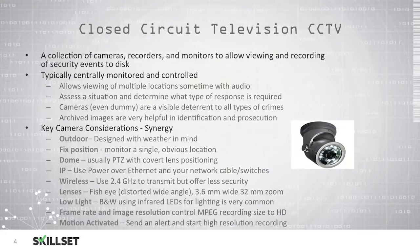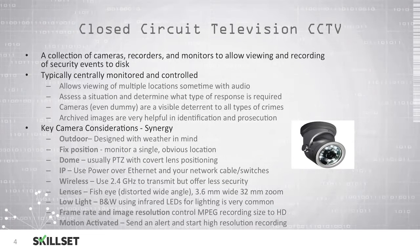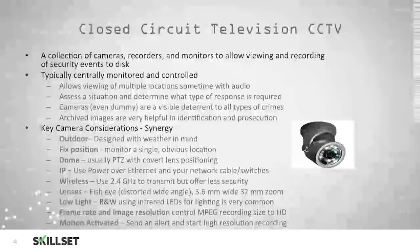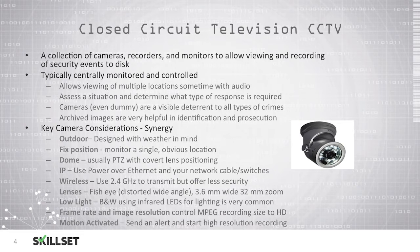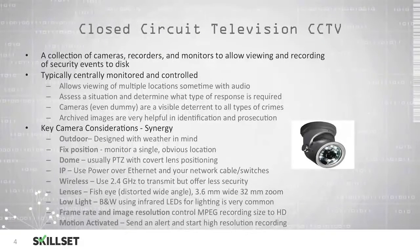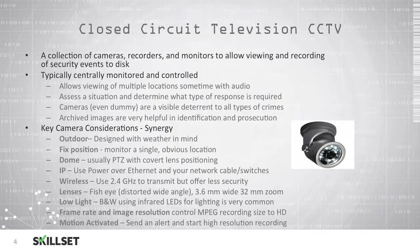With closed circuit television systems you will use a collection of cameras, recorders, and video monitors so that security events can be viewed and also saved to a disk or some other type of storage system. Cameras are typically centrally monitored and controlled, which allows multiple people from different locations to view the cameras, sometimes even with an audio feed. These individuals can monitor the cameras and determine if a response is required and if so what type of response should occur. Cameras are a very good visible deterrent to different types of crimes. Even fake cameras are able to deter individuals from committing crimes. If a crime does occur, you can use archived images and video to help identify and prosecute the individual responsible.